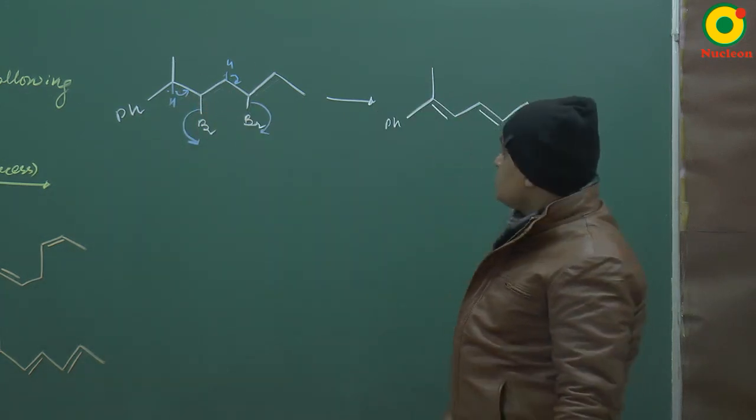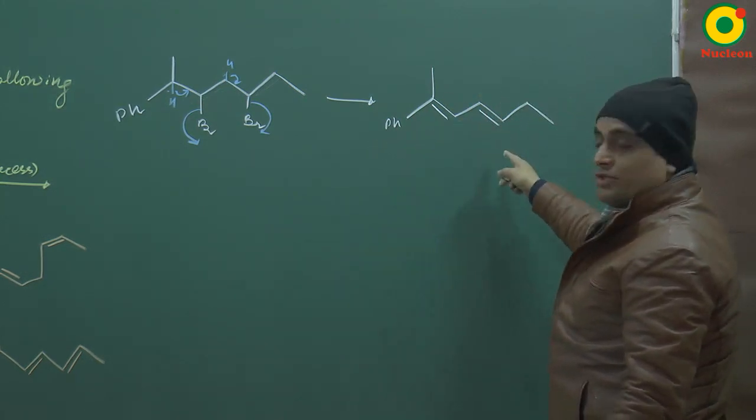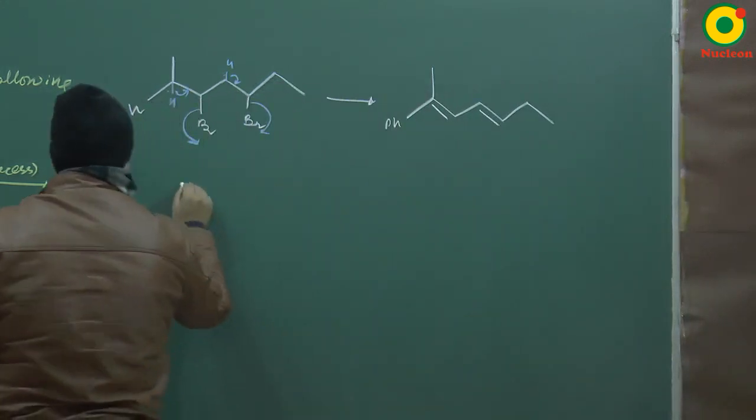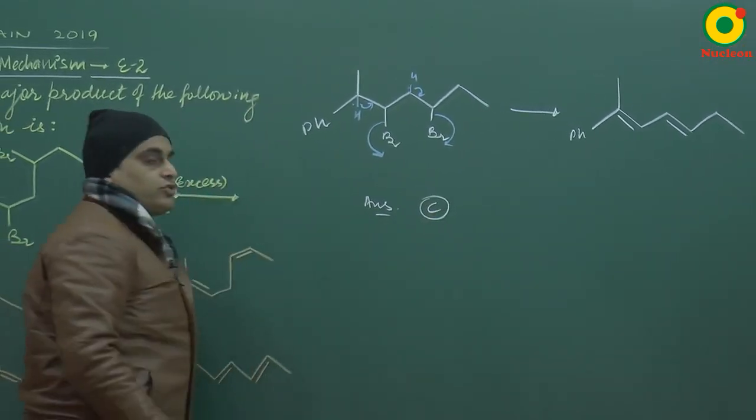So, this alkene is the most stable product formed in this reaction and this will be the major product as such, and that's why our answer for this reaction will be, the answer for this question will be option C. Please note.